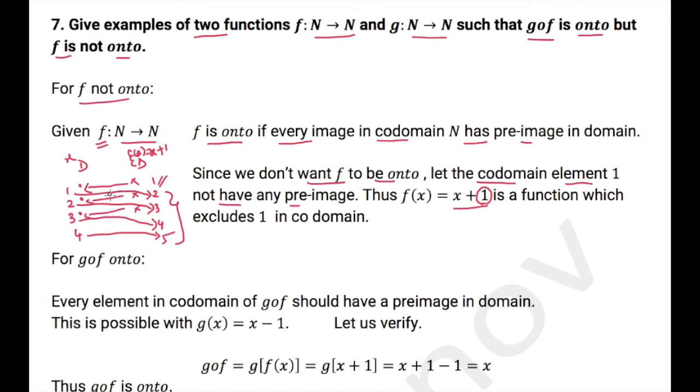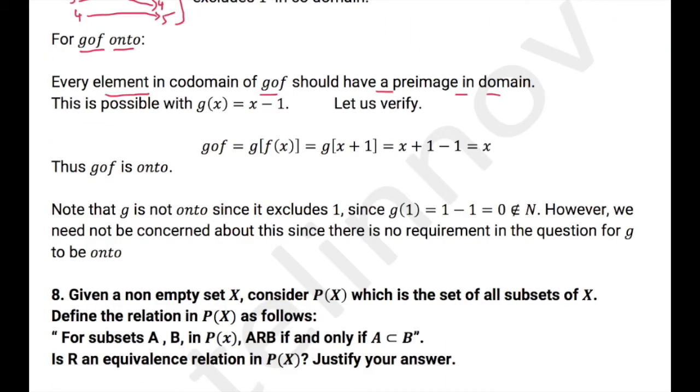But we need g of f to be onto. Now, every element in the codomain of g of f should have a pre-image in the domain. How we can do this? We can consider the function g(x) = x - 1. So g of f = g(f(x)) = g(x+1) = x+1-1 = x.